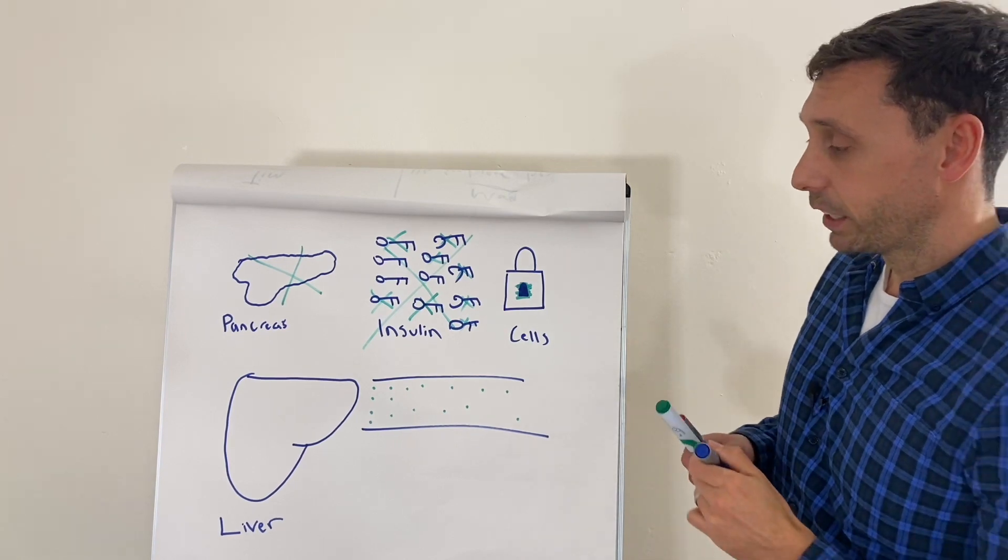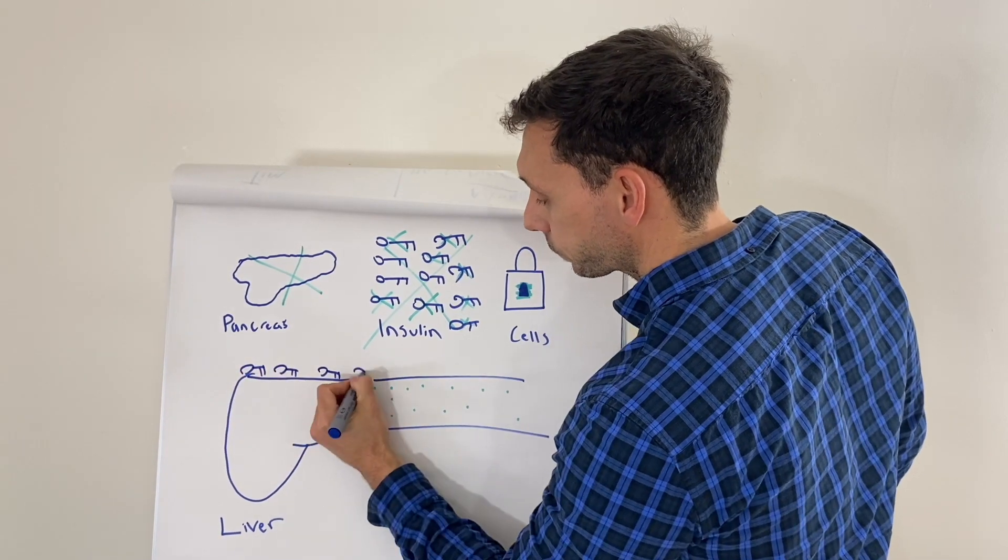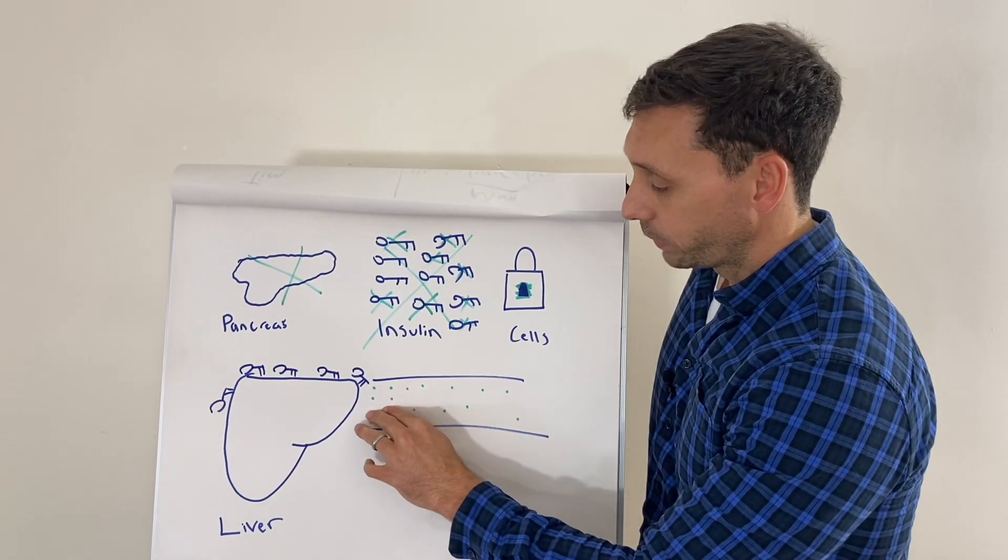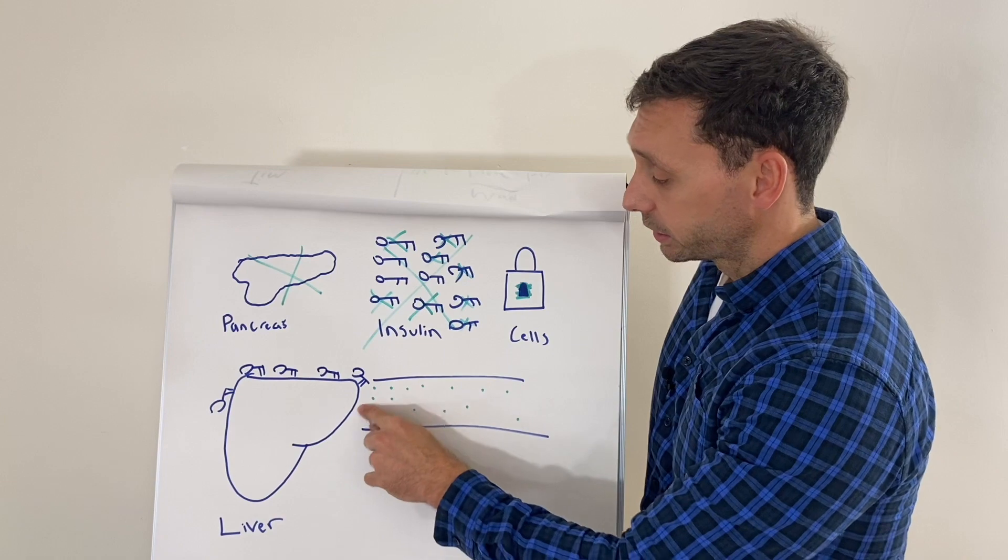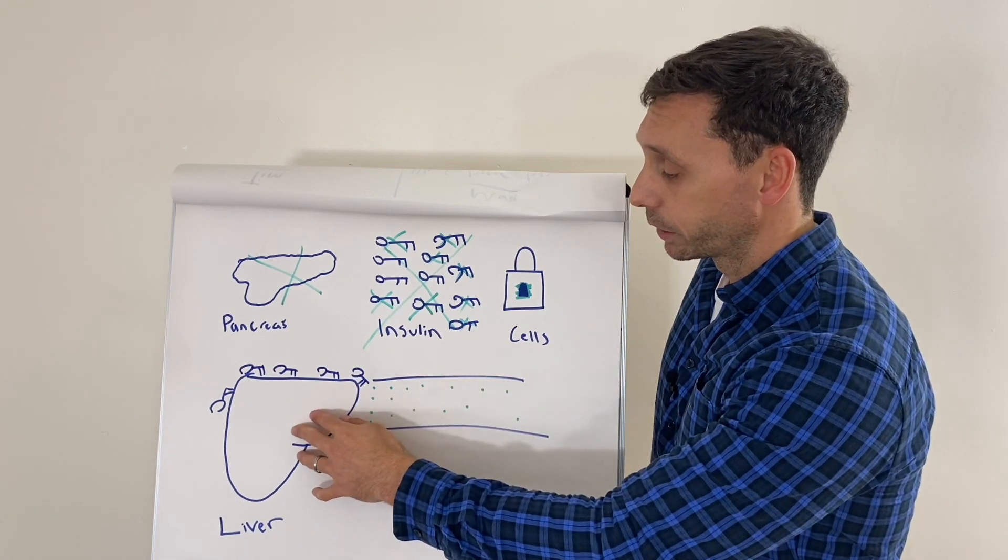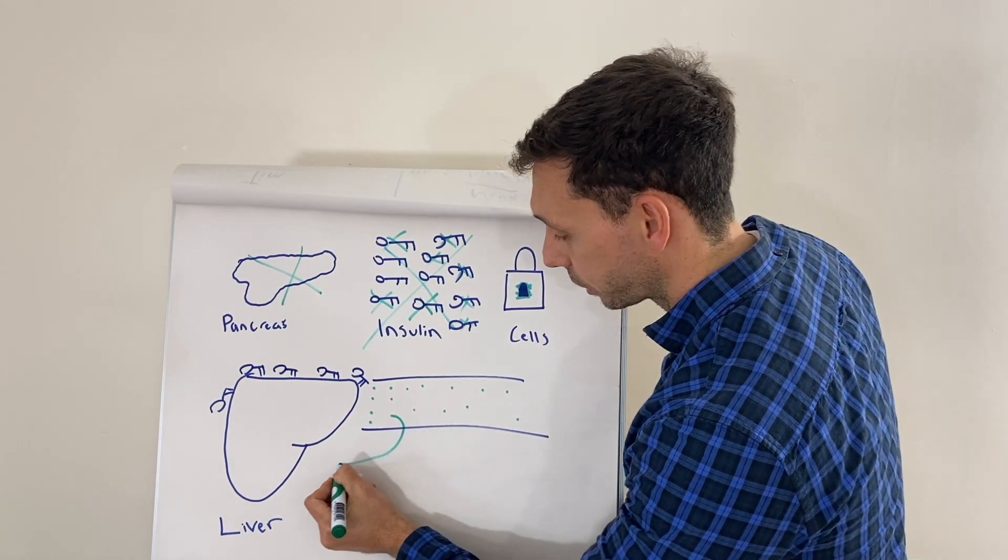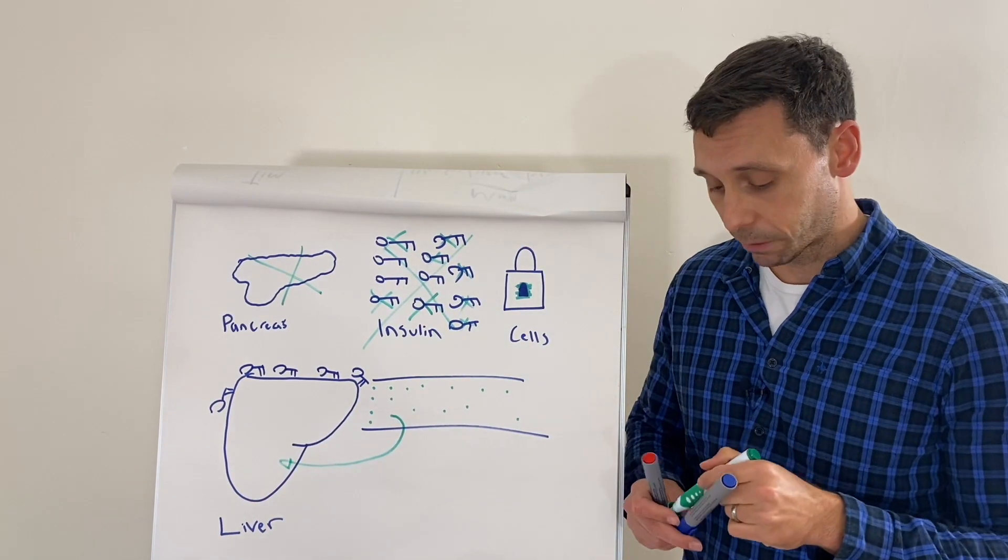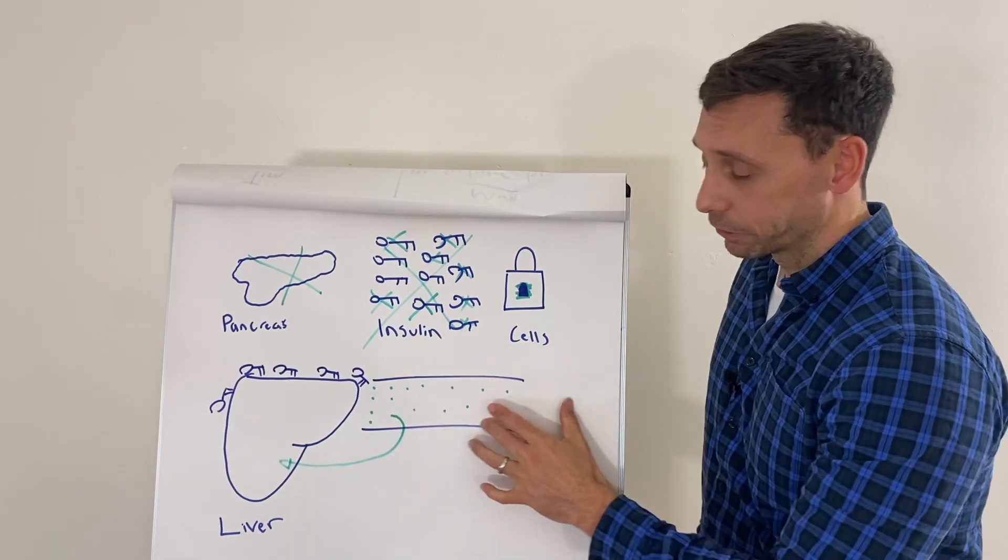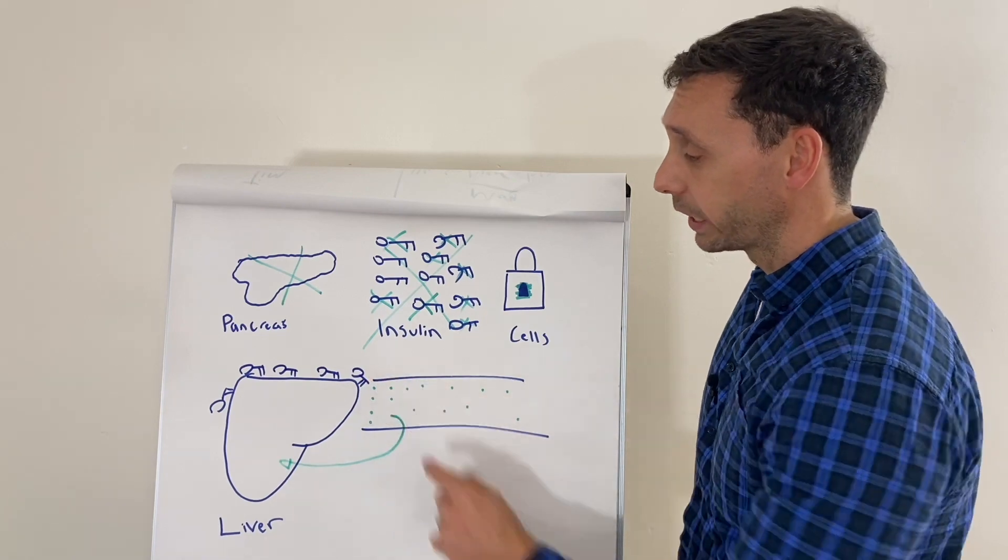And the way it does that is these insulin keys will land on the liver. Nice way to visualize it. And what happens is when insulin lands on the liver, it tends to turn off its glucose releasing system. So then you'll end up with less glucose in the blood because we have eaten and we actually need to go from a place of releasing it to storing it. So in that instance, when insulin levels are high, glucose actually goes back into the liver to be stored as something called glycogen. So glucose is free sugar that's floating around in the blood. Glycogen is the stored form in the liver, in the kidneys, and in the muscle cells. This is what insulin does.